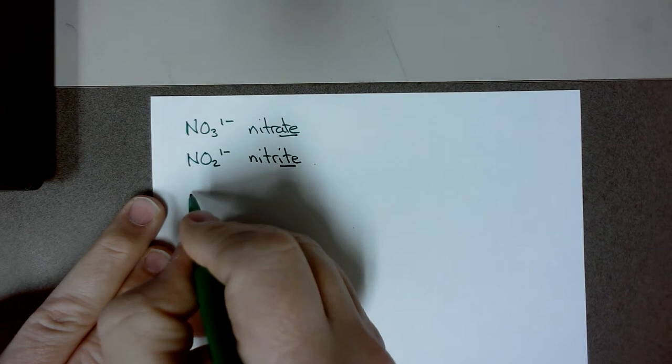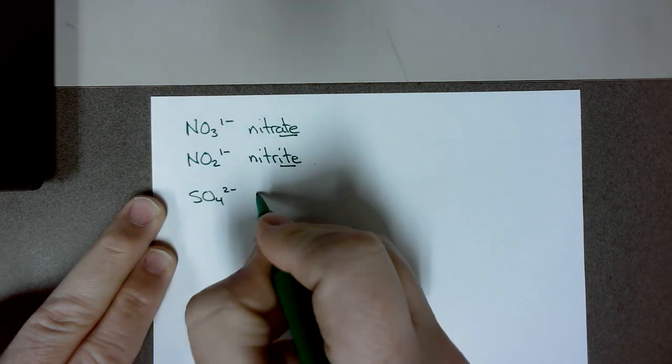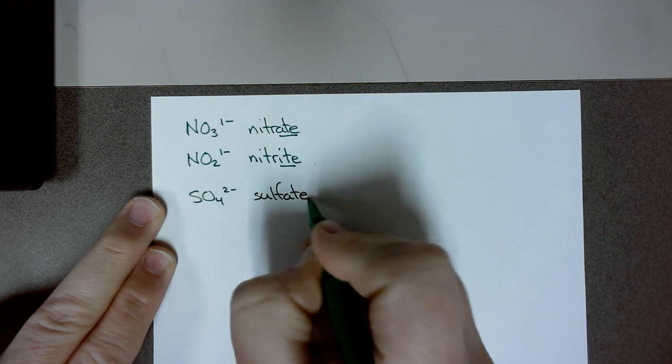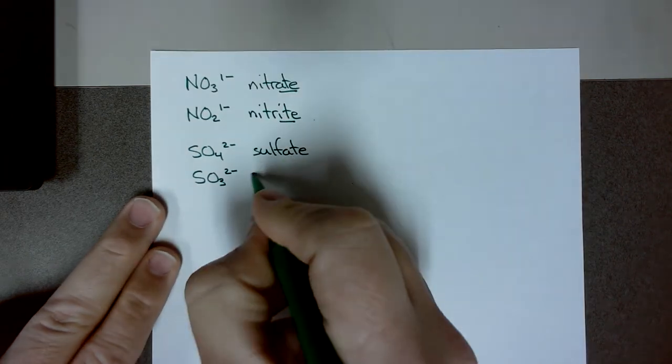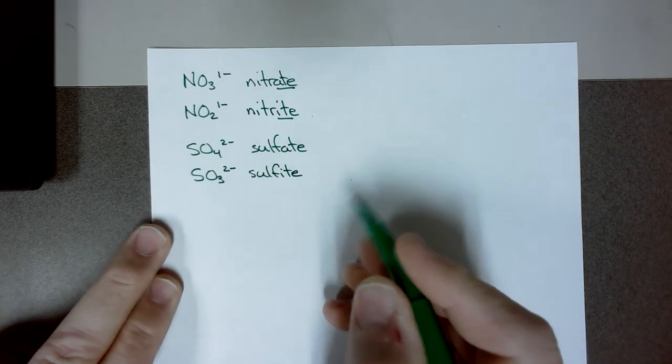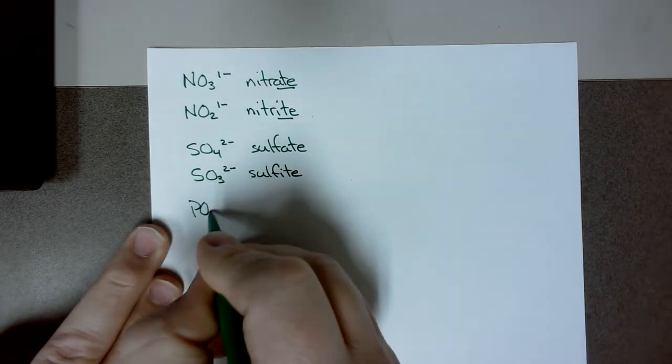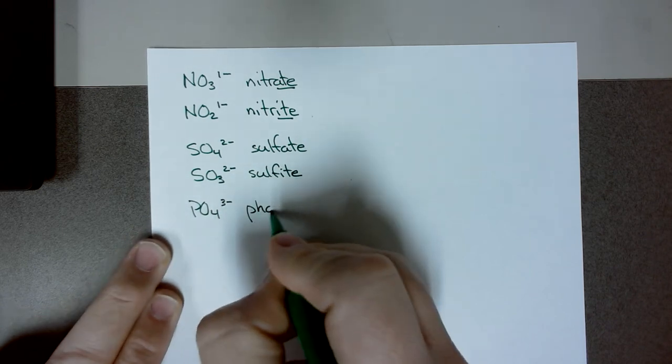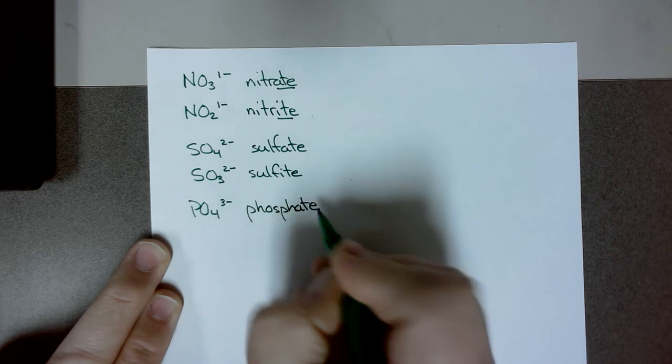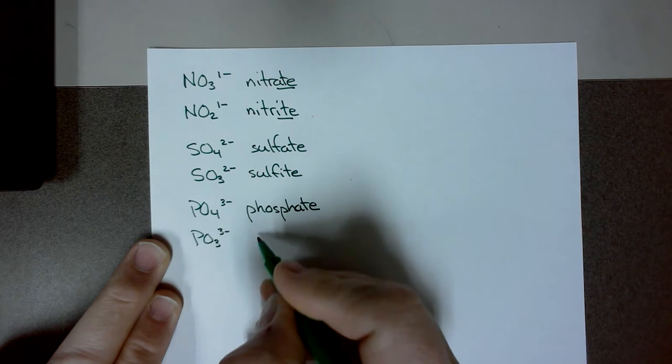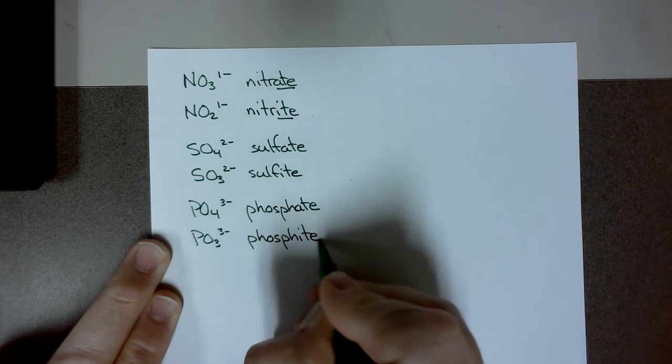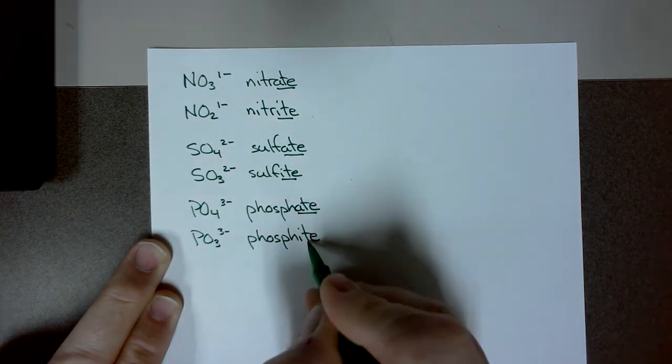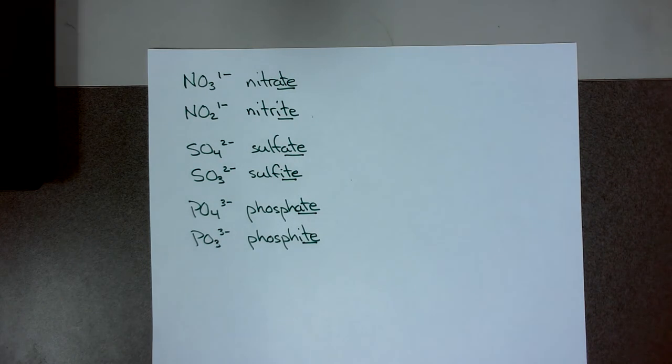The next one would be sulfate. So we look at sulfate, SO4 2 minus. And if I drop an oxygen, that'll be SO3, still the same charge, 2 minus. And that would be sulfite. And then we have phosphate, PO4 3 minus. Drop an oxygen, that'll be PO3 3 minus, same charge. It is now phosphite. So phosphate, sulfate to sulfite, phosphate to phosphite. Now that doesn't happen with carbonate or acetate or the others. It just happens with these three.